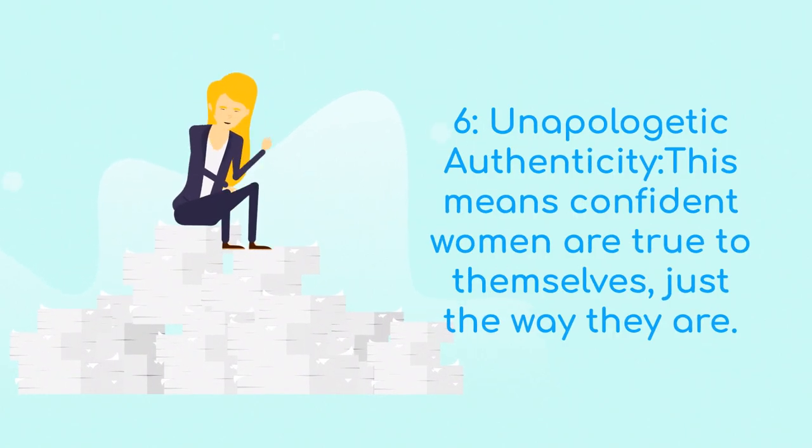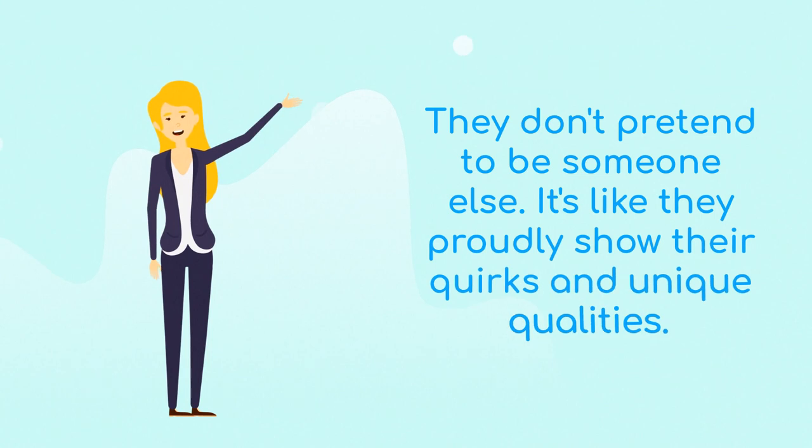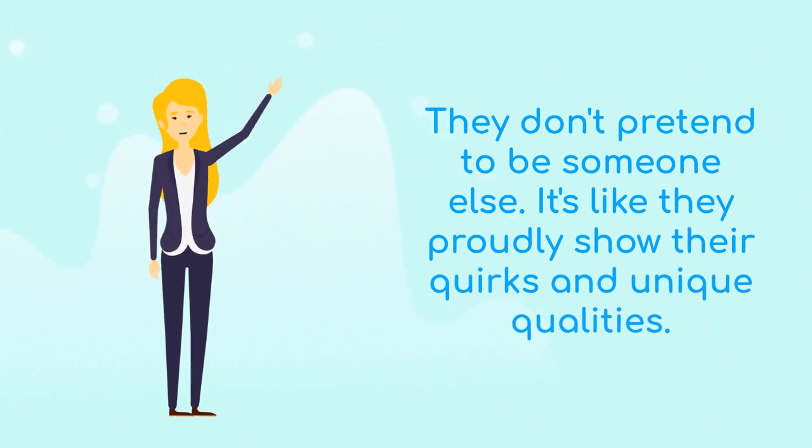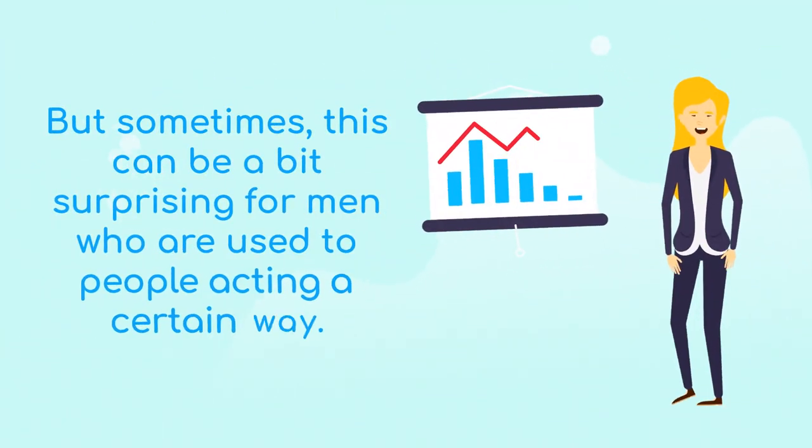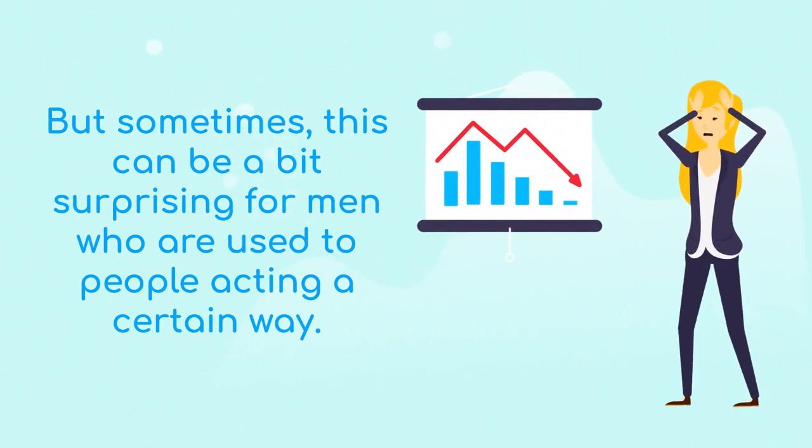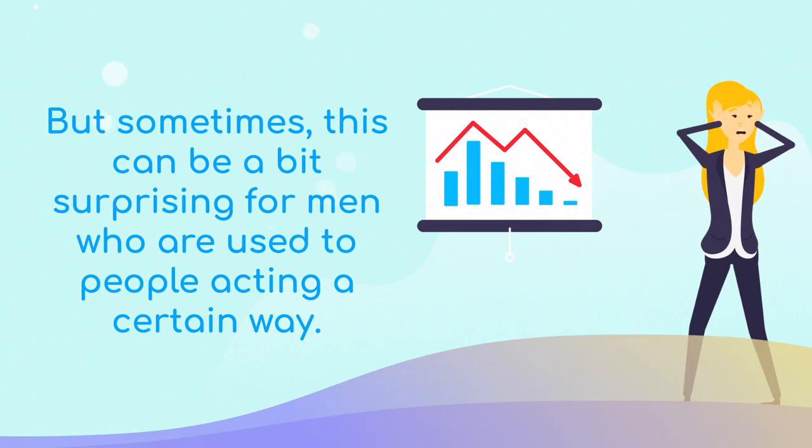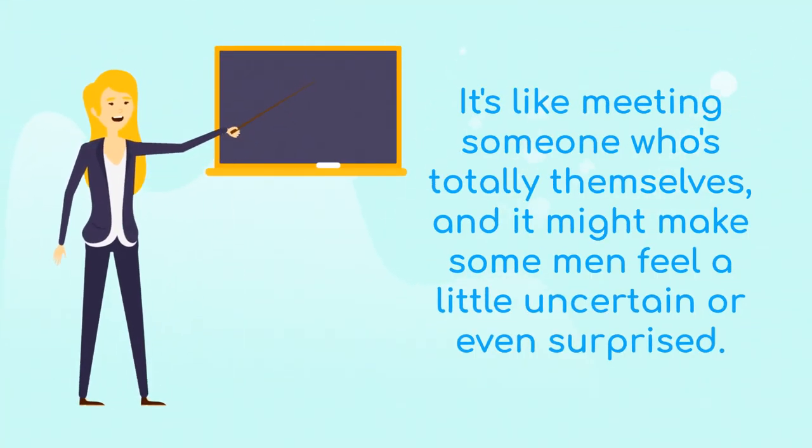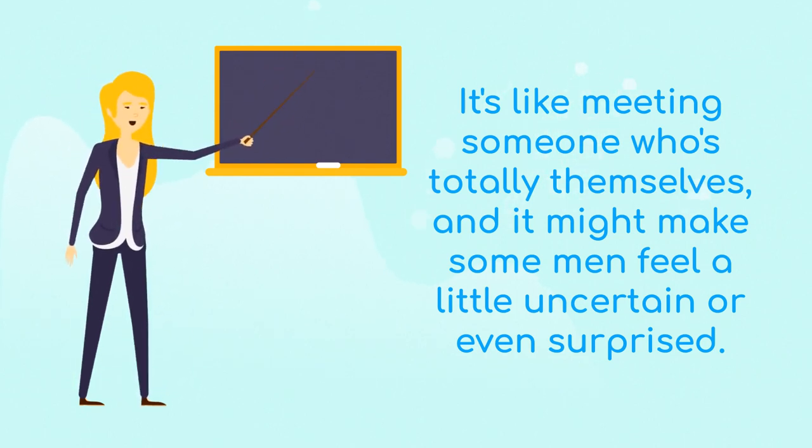Sixth, unapologetic authenticity. Next up is something called unapologetic authenticity. This means confident women are true to themselves, just the way they are. They don't pretend to be someone else - they proudly show their quirks and unique qualities. But sometimes, this can be a bit surprising for men who are used to people acting in a certain way. It's like meeting someone who's totally themselves, and it might make some men feel a little uncertain or even surprised.